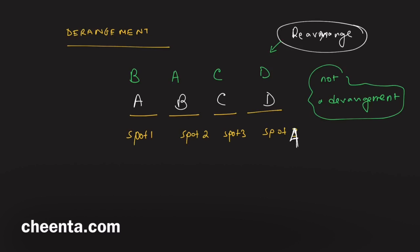In this case, C remains in spot 3 - it was initially in spot 3 - and D remains in spot 4, initially in spot 4. So maybe I can write a different example to make this a derangement.